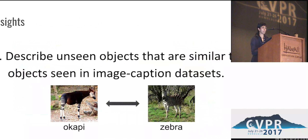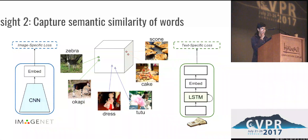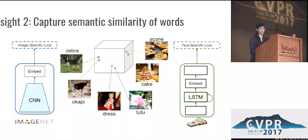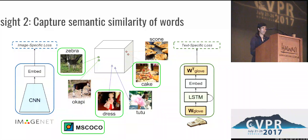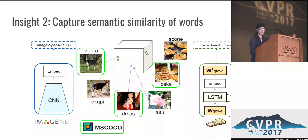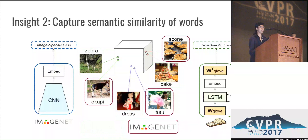We also want to be able to describe unseen objects that are similar to objects that have been seen before in existing image caption datasets. For this, as seen in some previous papers, we use semantic word embeddings — dense word embeddings that can capture semantic similarity of words. More importantly, we incorporate these embeddings both in the input and the output of a language model. The intuition is that our image caption dataset contains captions about some categories of objects, and we want to enable our language model to generate sentences about different objects that are similar to what it has seen in the caption dataset.